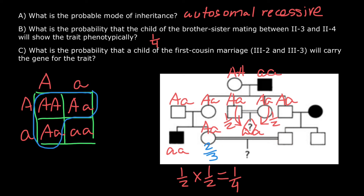Now let's find the probability of this person also being a carrier. We know that the mother of this person is affected — so small a, small a genotype — and this person shows a normal phenotype, meaning one allele must be dominant. From the father's side, we know the father is an obligate carrier, but this person got the dominant allele from the father's side, because from the mother's side he can get only a recessive allele, yet his phenotype is normal. So we know that he is an obligate carrier, and the probability is 100%, or one over one.